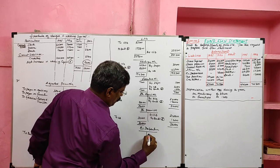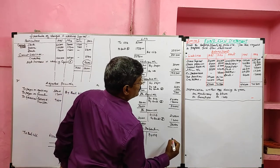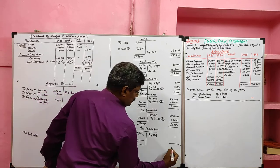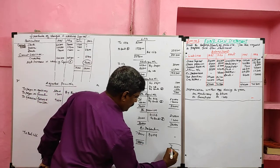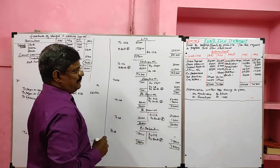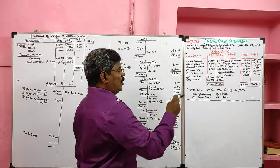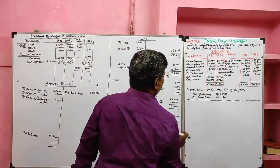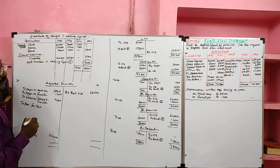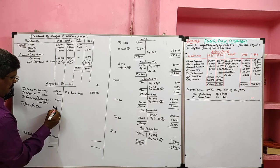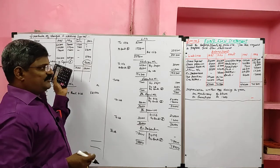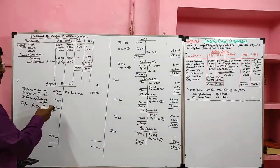8% debentures: opening balance nil, closing balance 78,000. The balancing figure appears on the credit side — 'by bank' — it goes to the sources side as issue of 8% debentures. Tax provision is not under current liabilities: opening balance goes to the application side as tax paid; closing balance of 32,700 is credited to the adjusted profit and loss account as provision for taxation made.